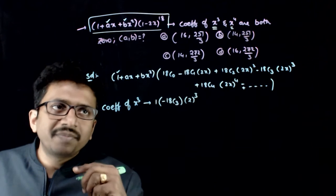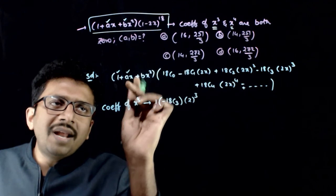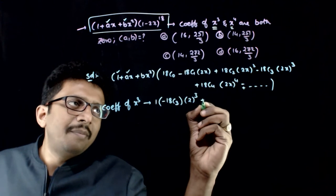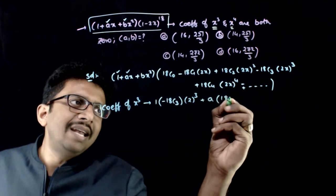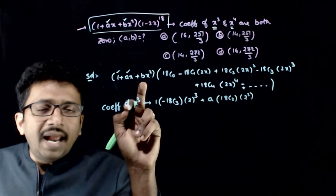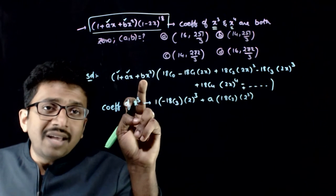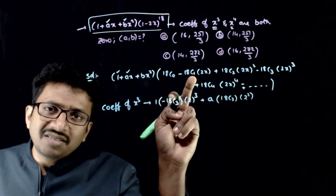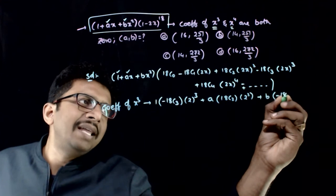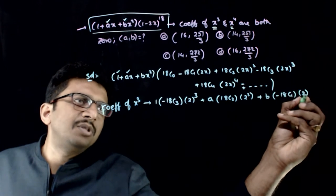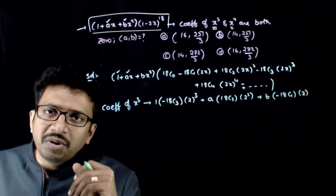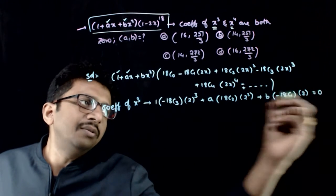You also get an x³ term when the ax term is multiplied by the x² term: plus a times 18C2·2². And when the bx² term is multiplied by the x term: plus b times (−18C1·2). This is the total x³ coefficient, and it has to be equal to 0.